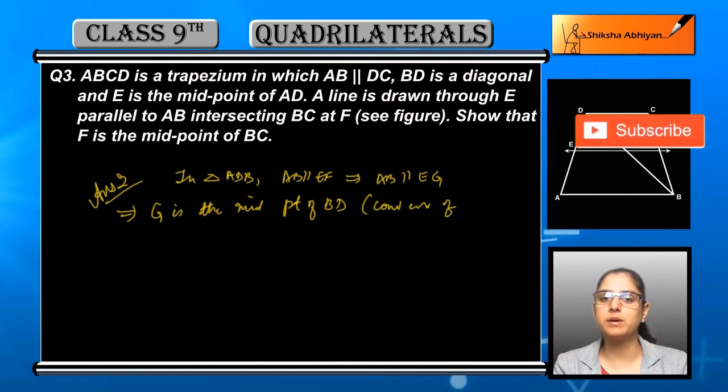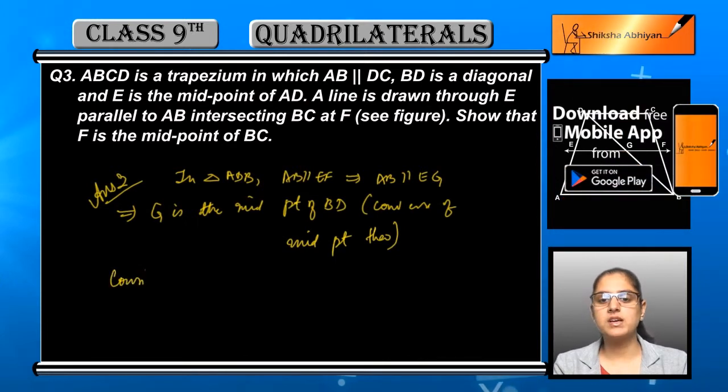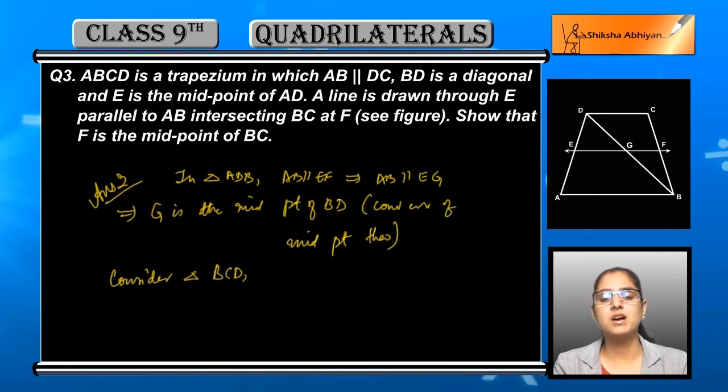of BD. So we have two things: one midpoint and one parallel side. Now from this we can say that G is the midpoint of BD by the converse of midpoint theorem.